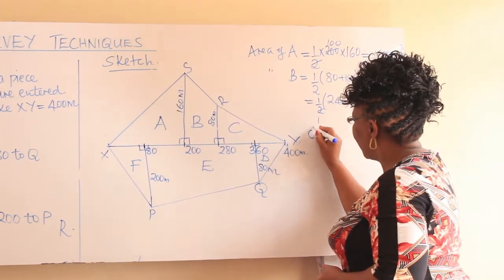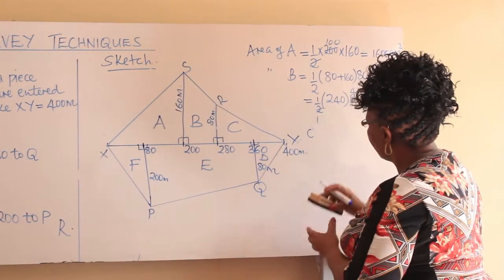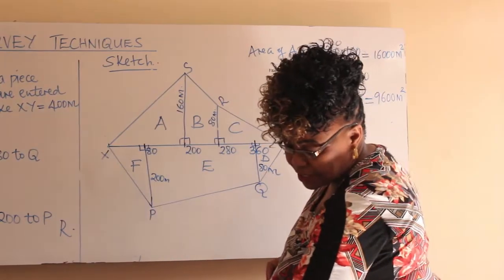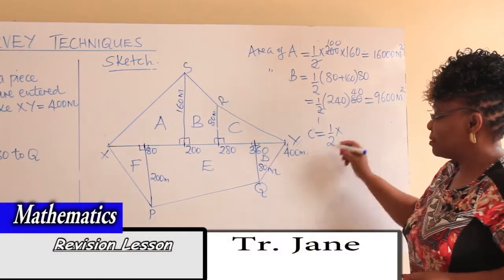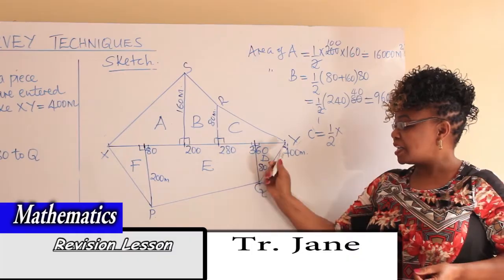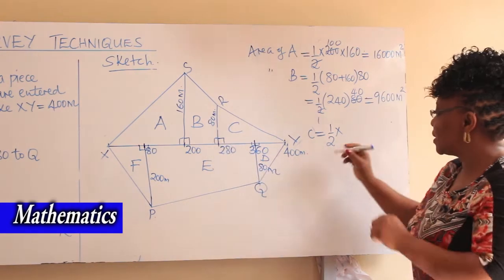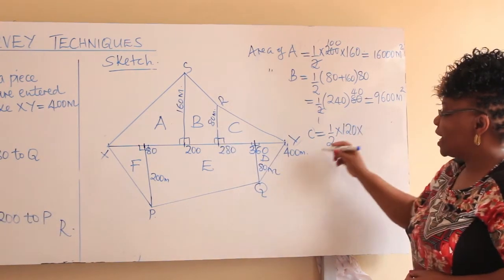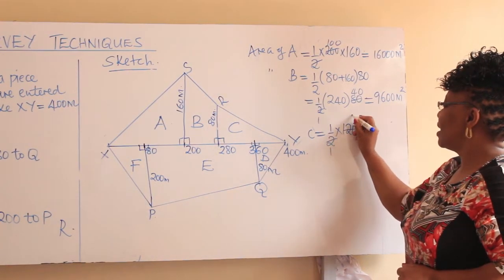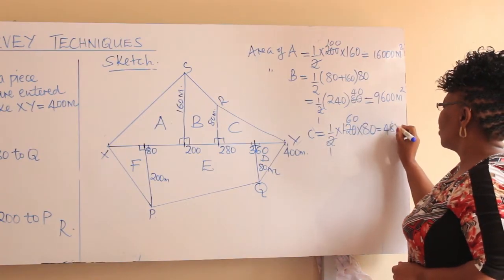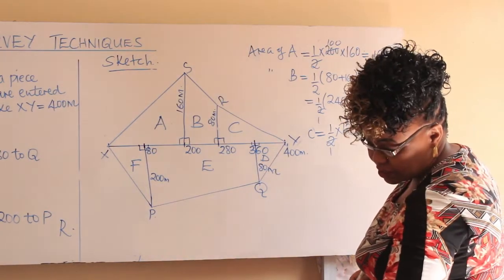We go to C. C is a triangle. We talk of a half times base times height. The base is 400 minus 280, which gives us 120. Our height is 80. Working it out, we get 4,800 meters squared.